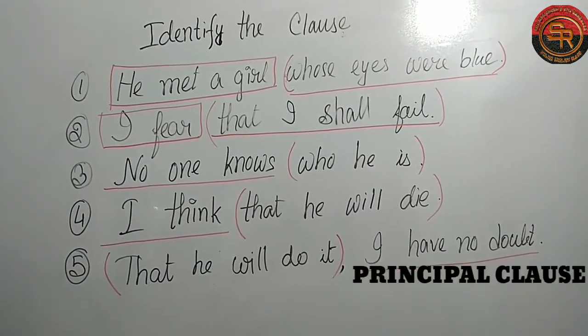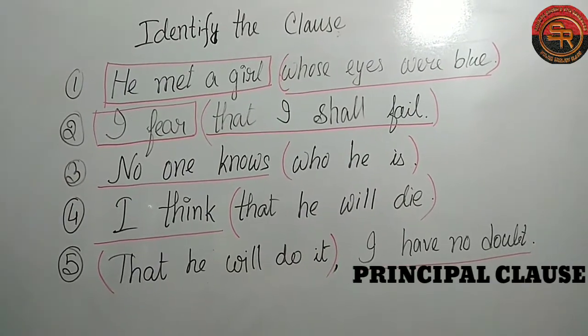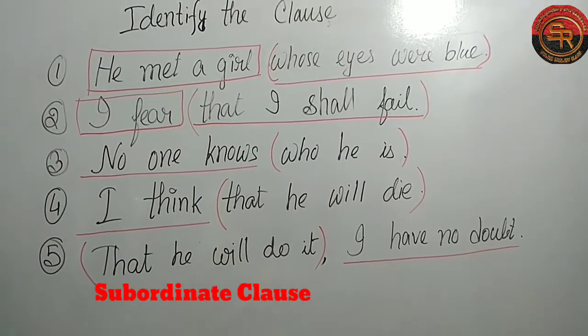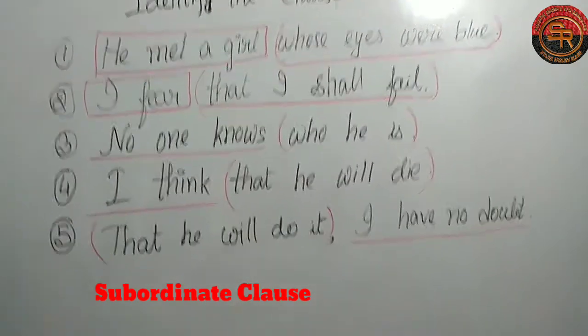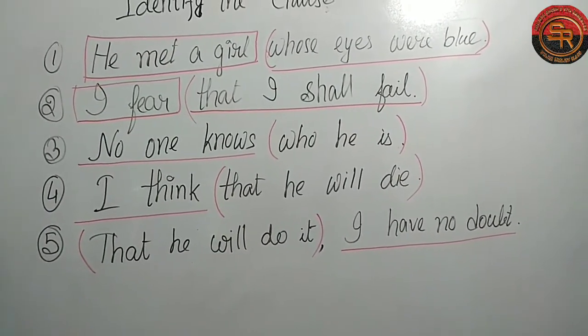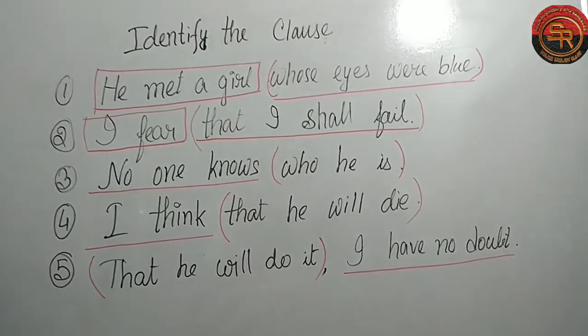And 'that he will do it' is the subordinate clause. If I ask you what do you have no doubt of, the answer is 'that he will do it' — that is our subordinate clause.